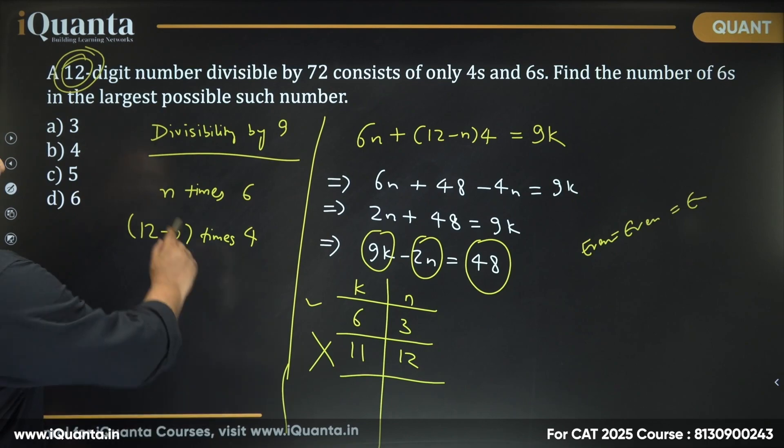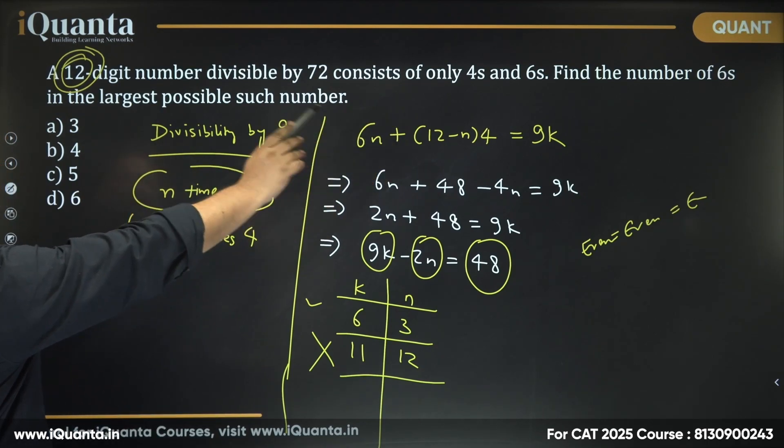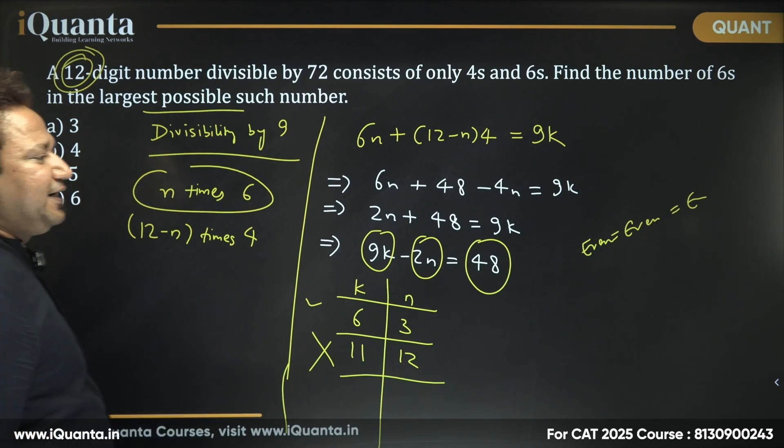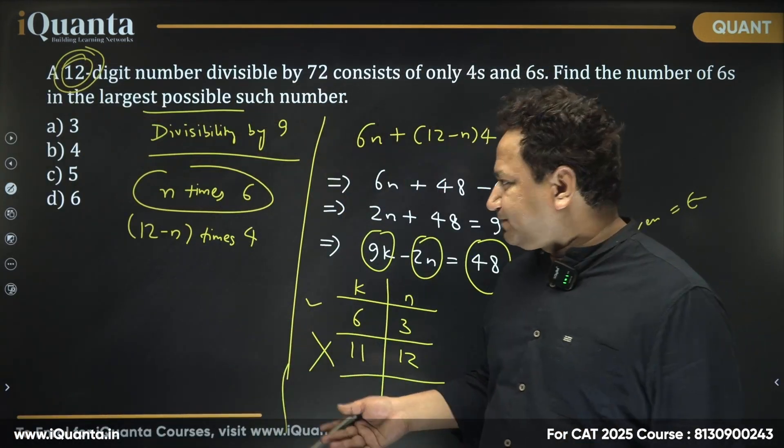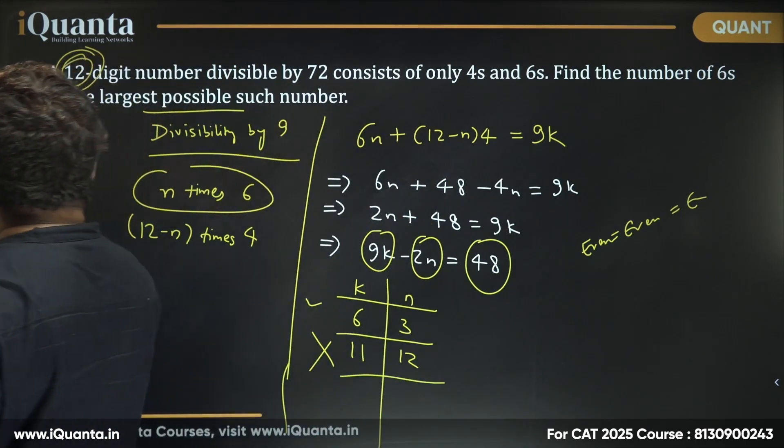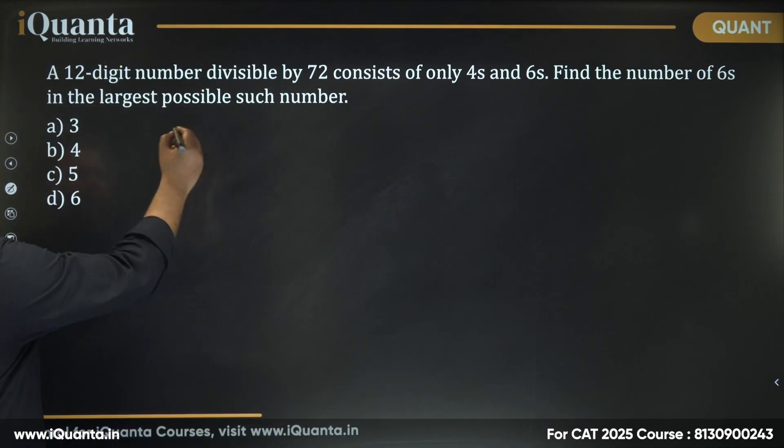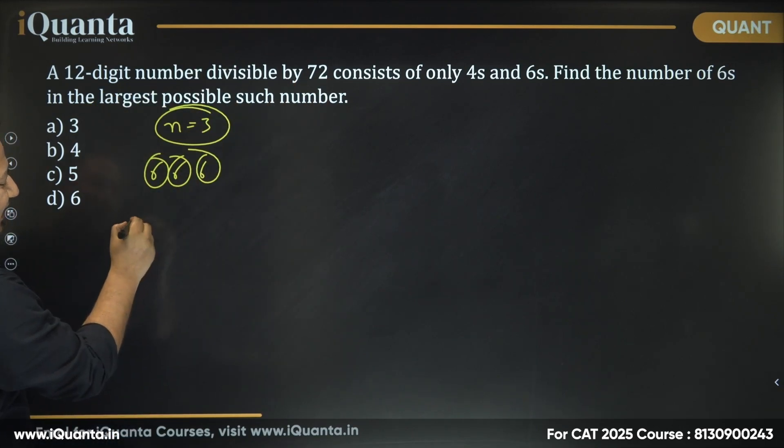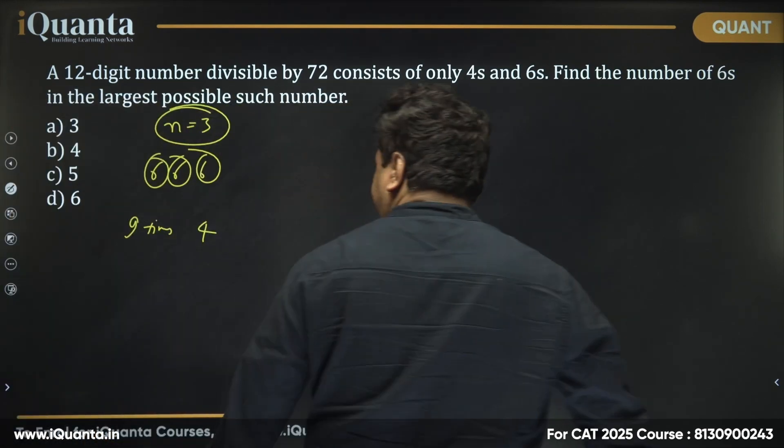Now, n times 6. The question asks find the number of 6s in the largest possible such number. We got n is 3. So n is 3 looks correct to me. But that is not the end. We also have to check the divisibility by 8. So we got n is 3. That means there are three 6s in any order. We have three 6s. And we have remaining 9 times 4.